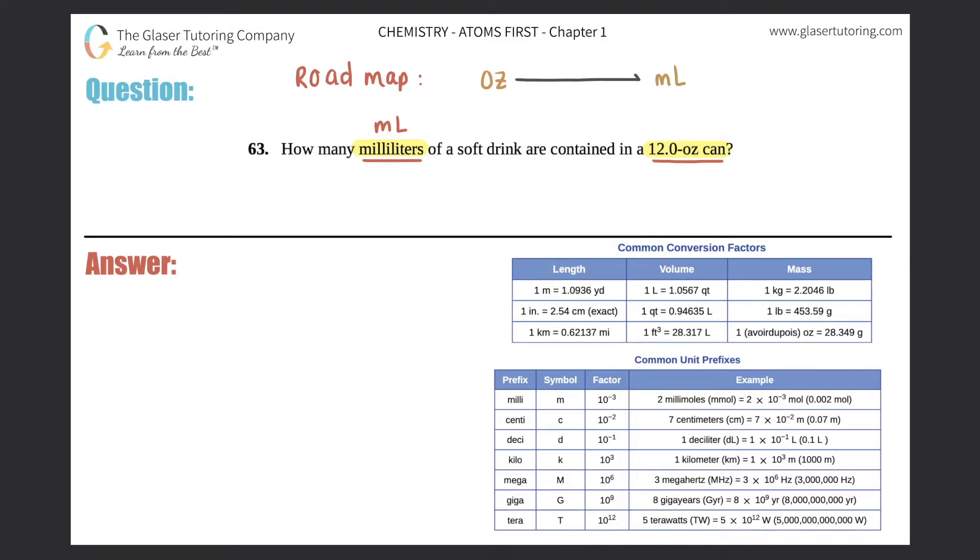The first thing I would say to myself is, is there a direct conversion between ounces and mils? This ounce we're talking about a volume because we're talking about a soft drink in liquid form. So we look in the volume category and I'm trying to find ounces to milliliters and I don't really see anything - liters and quarts, quarts and liters, feet cubed and liters.